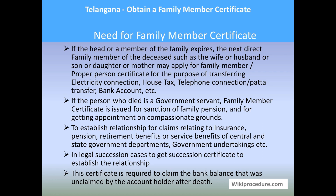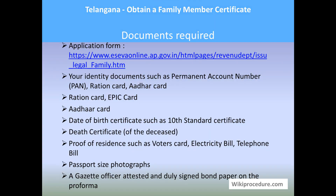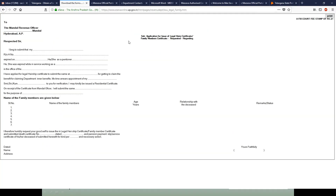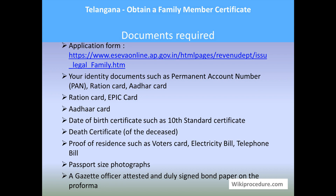Let us see the documents required for this procedure. The application form can be downloaded directly from the link provided here. Documents needed include: your identity card such as PAN card, ration card, or EPIC card; date of birth certificate such as a 10th standard certificate; death certificate of the deceased person — mandatory; proof of residence such as water card, electricity bill, telephone bill, or passport; a photograph; and a gazette officer attested bond paper or pro forma.